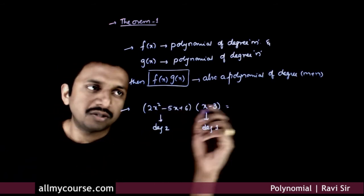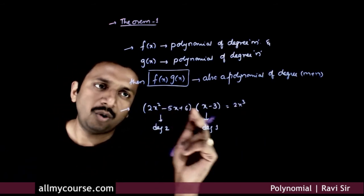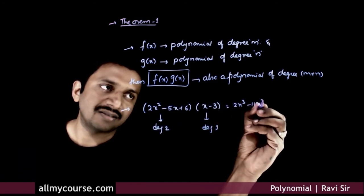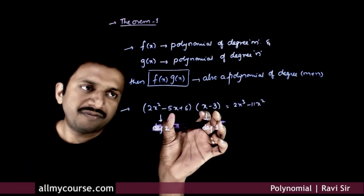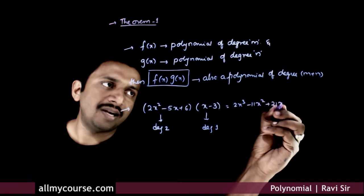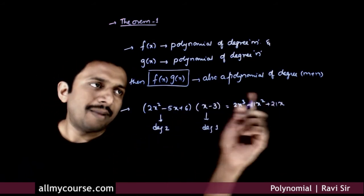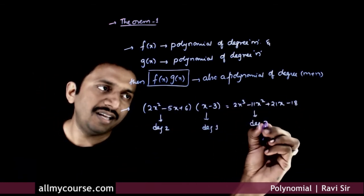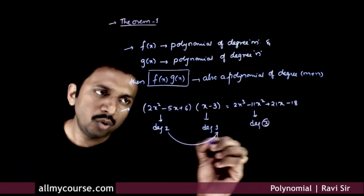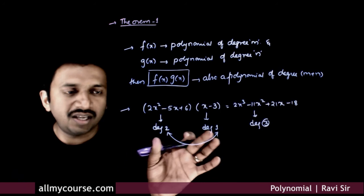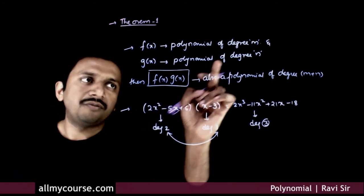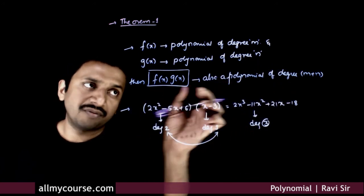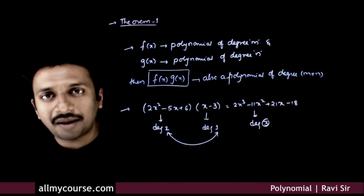you get 2x cubed minus 5x squared minus 6x squared, that is minus 11x squared. Next, plus 15x plus 6x, minus 18. This result is a polynomial of degree 3, which is equal to 2 plus 1. So if you have a polynomial of degree m and a polynomial of degree n, then f(x) times g(x) is a polynomial of degree m plus n.